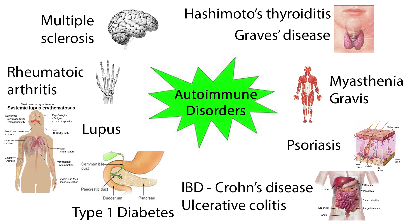Graves' disease occurs when the immune system produces antibodies that stimulate the thyroid gland to release excess amounts of thyroid hormone, causing hyperthyroidism. Hashimoto's thyroiditis occurs when antibodies produced by the immune system attack the thyroid gland, slowly destroying the cells that produce thyroid hormone, leading to hypothyroidism.